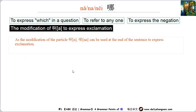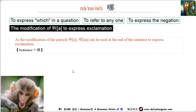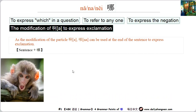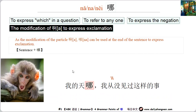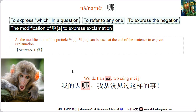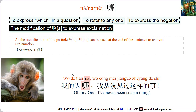哪 is also used at the end of a sentence to express exclamation, similar to 没有那么完美的事。In this case, 哪 is in neutral tone. For example: 我的天哪！我从没见过这样的事。我的天哪 means 'oh my god'. 我从没见过这样的事 means 'I've never seen such a thing'.